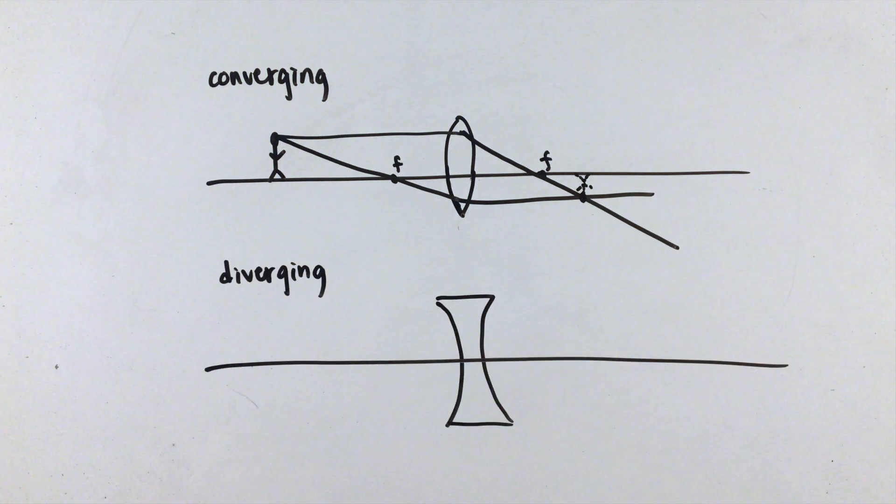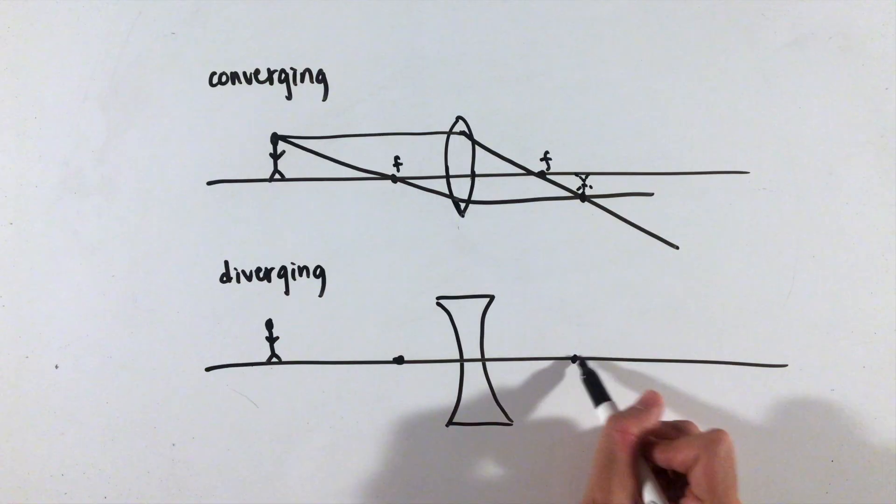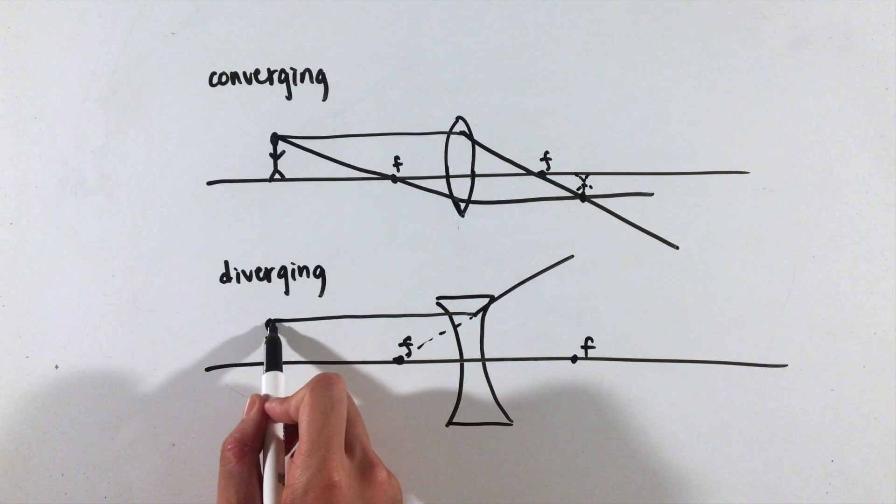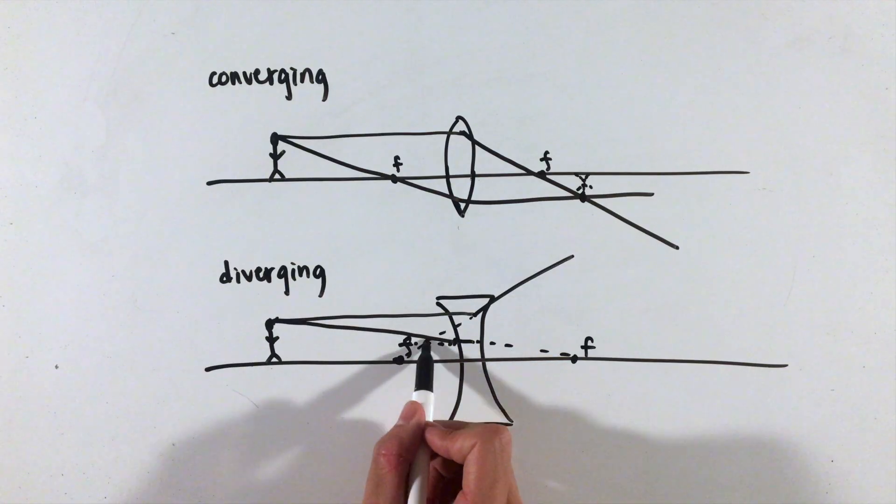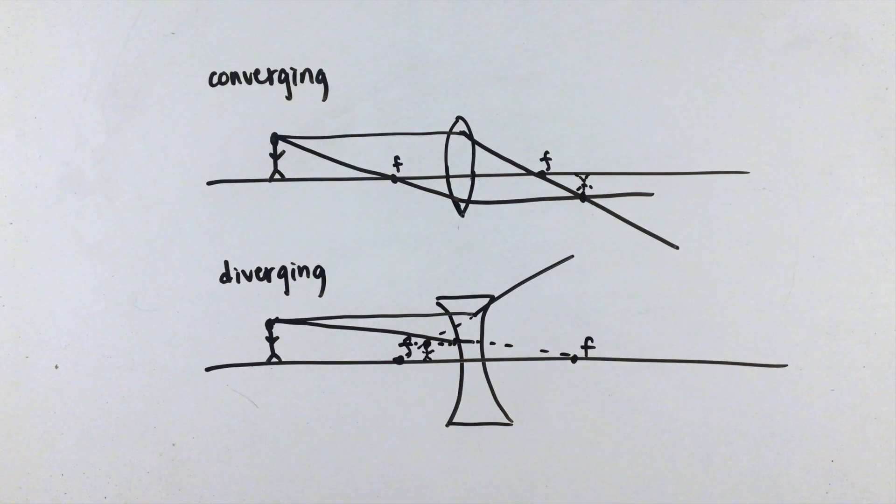For diverging lenses, however, our first step will actually use the focus on the same side as the object, as diverging lenses want to diverge or spread out the light rays. For the second step, we'll logically use the other focus, producing an image like this.